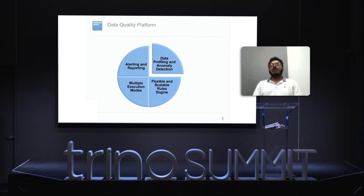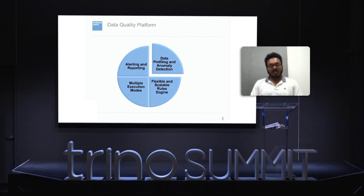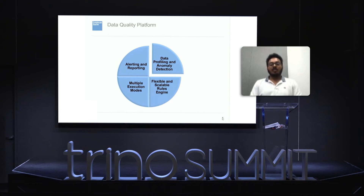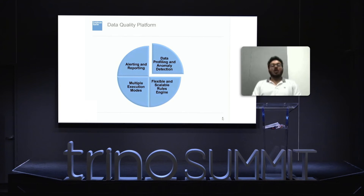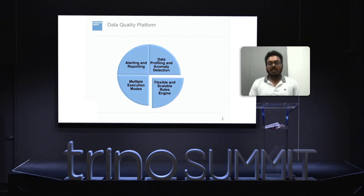Now we will talk about the core features of the platform. Firstly, data profiling and anomaly detection. The platform proactively profiles data at a column level and provides real-time insights — capturing data types, results of every column, and statistical measures like frequency distribution, min, max, average, and standard deviations. With these profiled stats, the platform can also automatically generate rules to detect anomalies, letting the user know if the data is in accordance with historical trends. The platform also has the intelligence to evolve these rules over time if the data changes gradually.